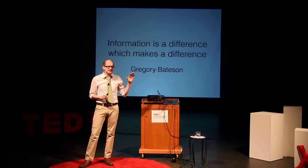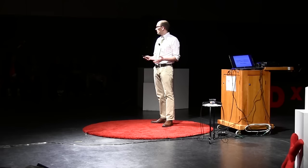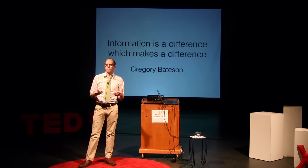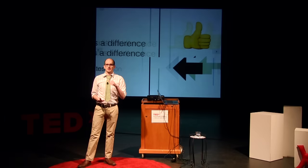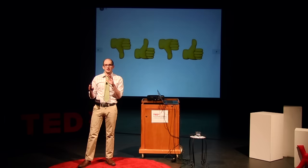This idea of information being a difference that makes a difference — what kind of differences could we have? It ultimately comes down to choices. Let's think about a really simple choice: whether we're going to turn to our left or turn to our right. We can encode this choice using a single binary number, a bit, which I'll represent with my thumb. So if I give you a thumbs up, that means turn left, and if I give you a thumbs down, then turn right.